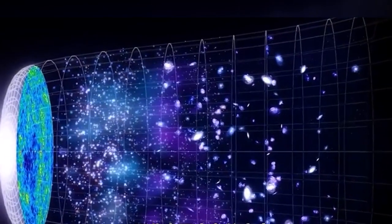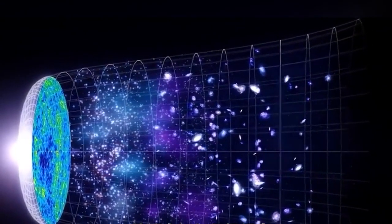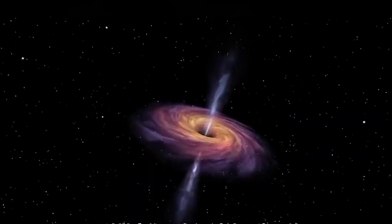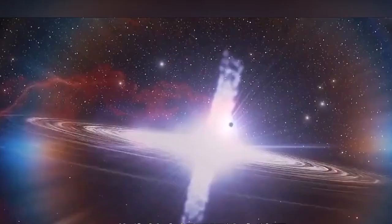According to Einstein's theory of relativity, the ancient universe should appear to move much slower than it does today. However, observing this far back in time has been a challenge. Fortunately, scientists have now cracked the code using quasars as clocks.